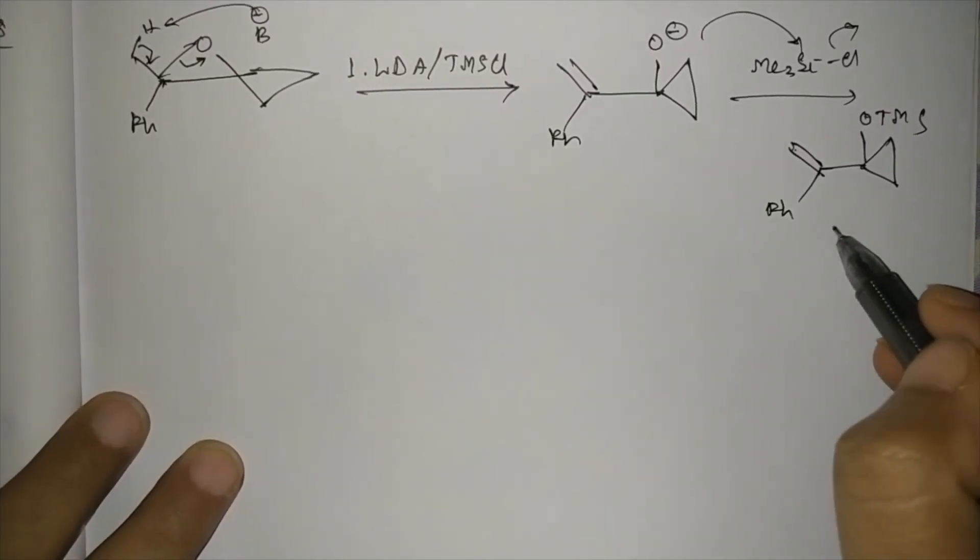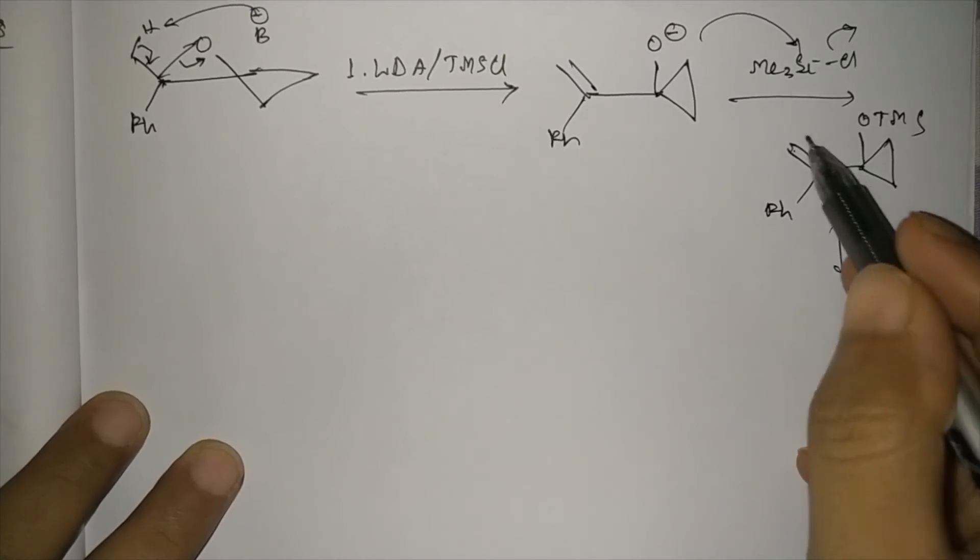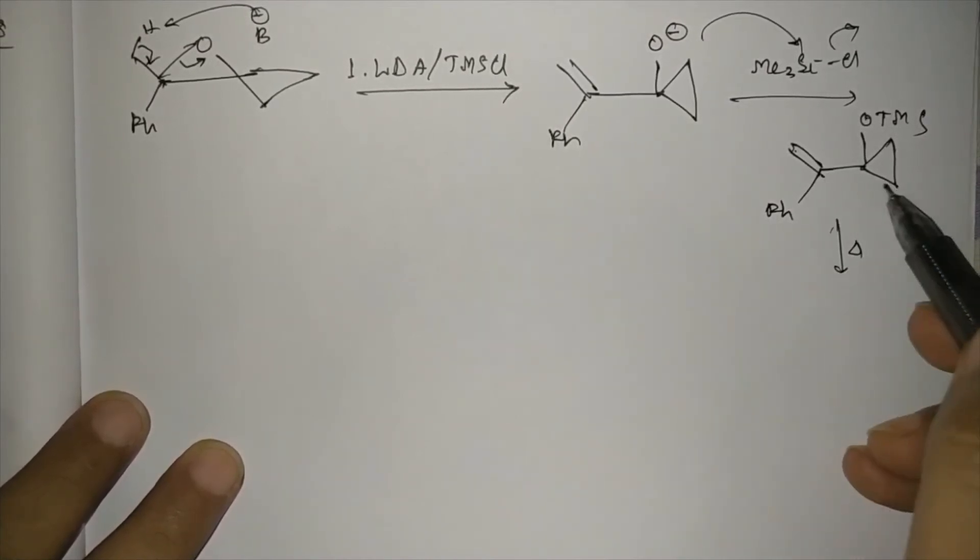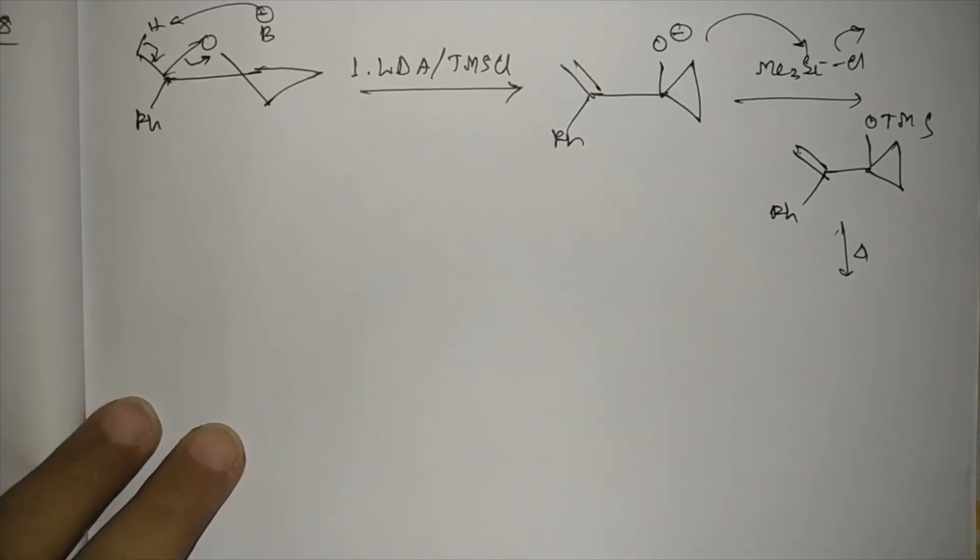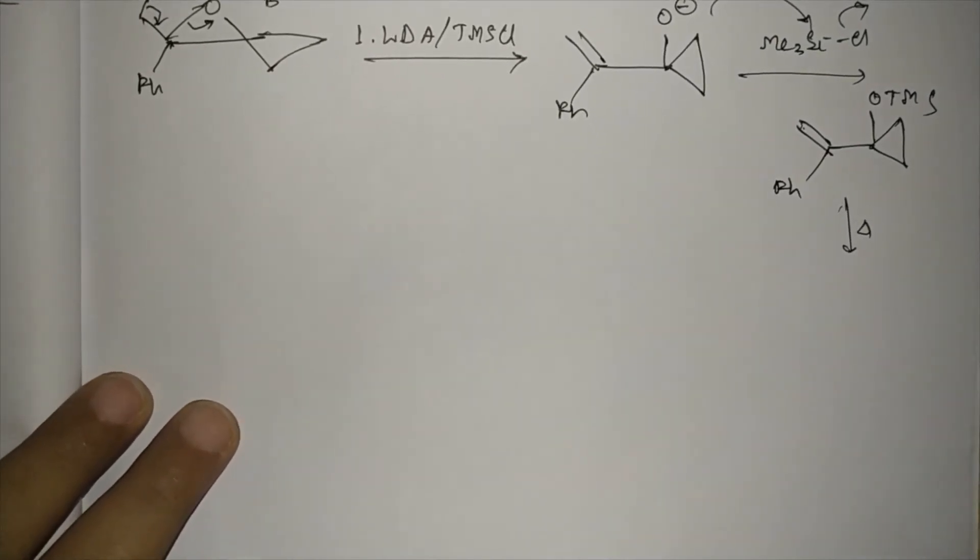Now if it is heated, then this is a vinyl cyclopropane system. If it is heated, then it will rearrange to a cyclopentene derivative. So what will be the product? We'll draw the mechanism.